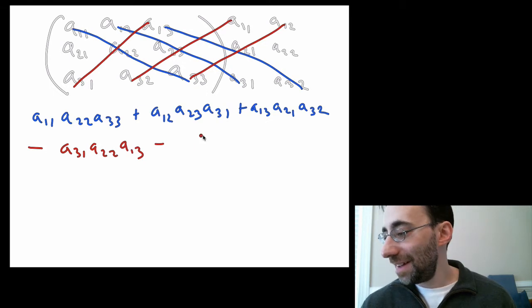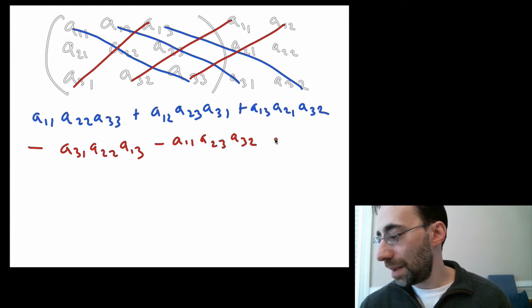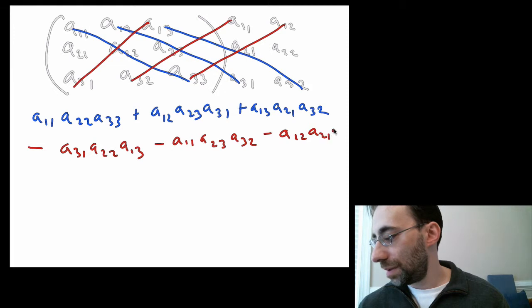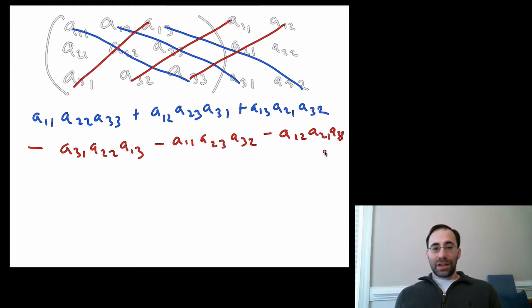So this would be the pluses, and then you would subtract from that the minuses, which would be A31, A22, A13, minus A11, A23, A32, minus A12, A21, A33. And that's called the rule of Sarrus or the butterfly method, and it's a way to quickly do a 3-by-3 matrix determinant. It requires you to just do this pattern, and this is a convenient way to memorize it. If you don't want to memorize anything, you can just remember that the pattern exists.